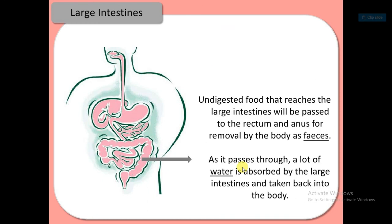In the large intestine, undigested food that reaches the large intestine is passed to the rectum and anus for removal from the body as solid waste. As it passes through, a lot of water is absorbed by the large intestine and taken back into the body.